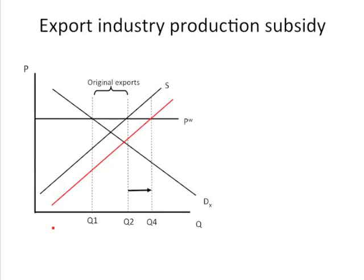The same number of workers are going to get jobs — no difference between that and the export subsidy on the production side of things, if the production subsidy is chosen properly. What's important to note here is that the domestic price does not rise. The firms have no particular incentive to sell internationally as opposed to domestically. They increase production and simply sell more abroad, and the amount available to the domestic market does not change. Domestic consumption continues to be at Q1.